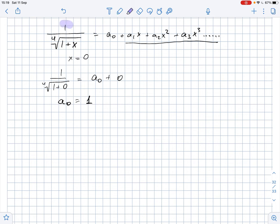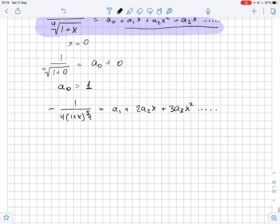Well, now on differentiating both sides of this initial equation, we will get that negative 1 over 4 times 1 plus x to the power of 5 over 4 equals a1 plus 2a2x plus 3a3x squared and so on.